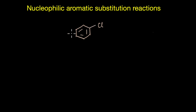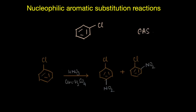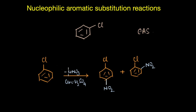We know that aromatic rings are electron rich, and this is why one of the most popular reactions of haloarenes is electrophilic aromatic substitution reactions like nitration, sulfonation, Friedel-Crafts reactions and so on.